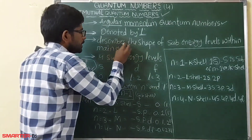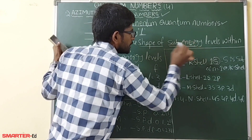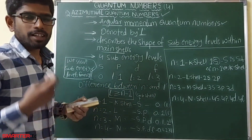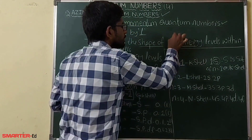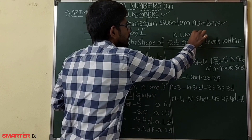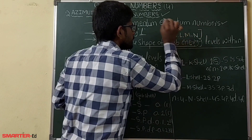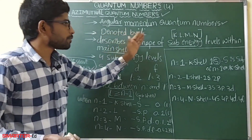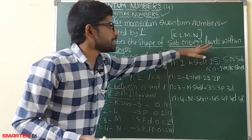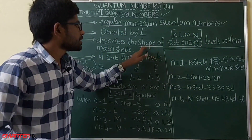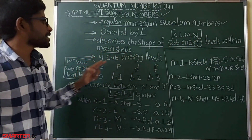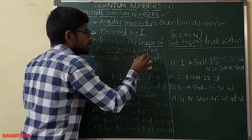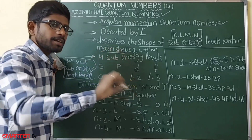The azimuthal quantum number describes the shape of sub-energy levels within main shells. The main shells are K, L, M, and N. Within these main shells, the azimuthal quantum number describes the shape of sub-energy levels.